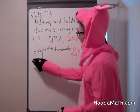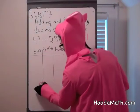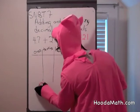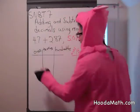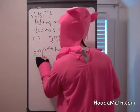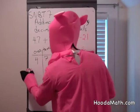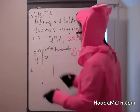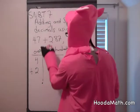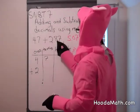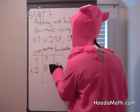Using the place value model, I want you to know that between ones and tenths, there is a decimal point. We have four and seven tenths plus two — that's two ones — and the decimal, eight tenths, and seven hundredths.